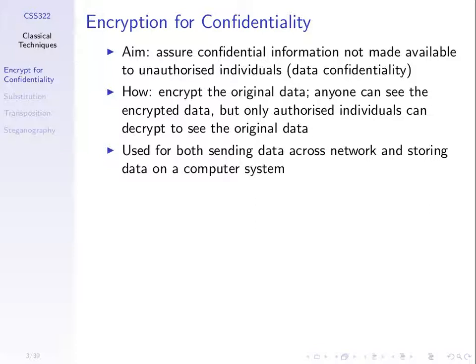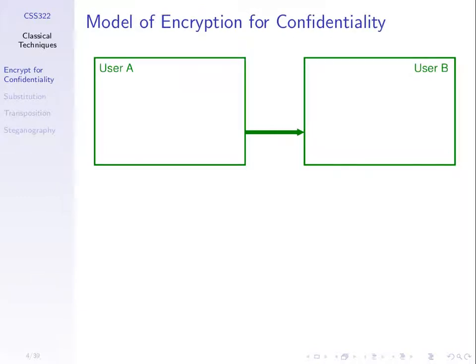Encryption for confidentiality is used for sending data across a network — so that people who intercept it cannot see the original data. It's also used for file storage: encrypting a file so that even if someone accesses your computer, they cannot decrypt and recover the original data. The same concepts apply for both networking and data storage.